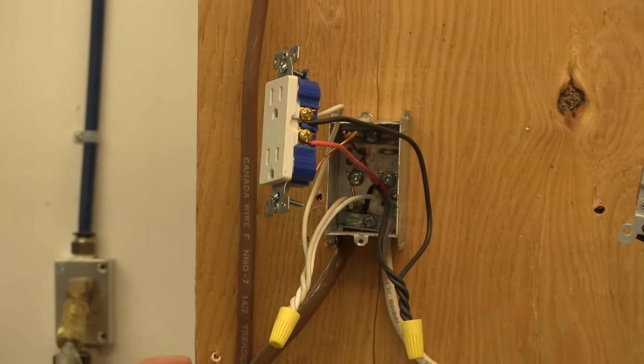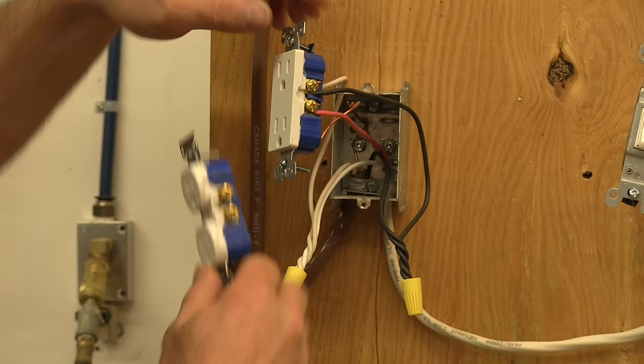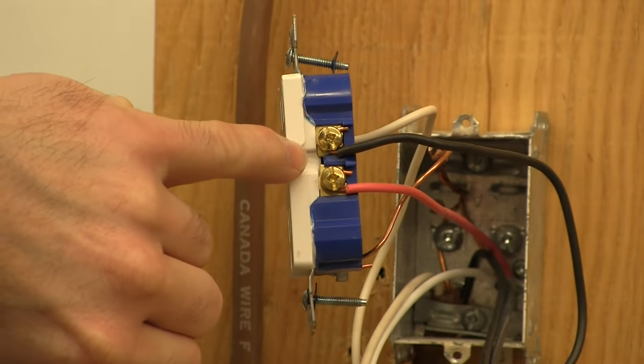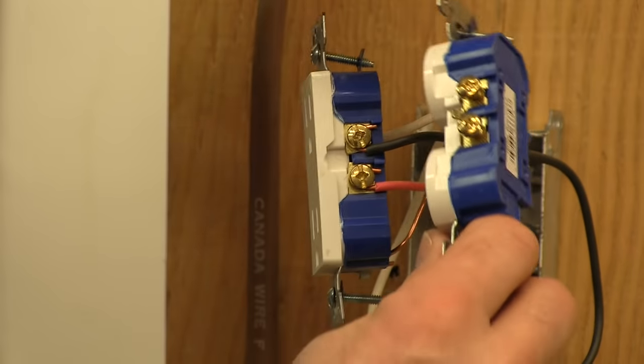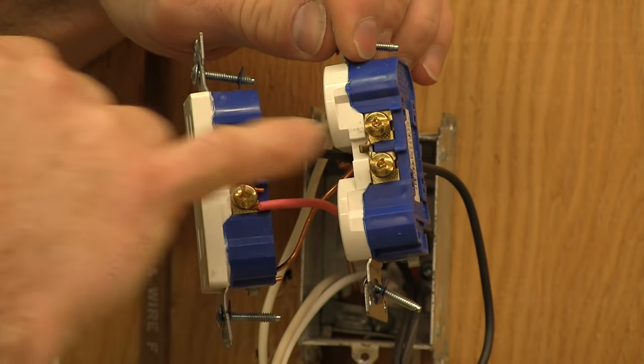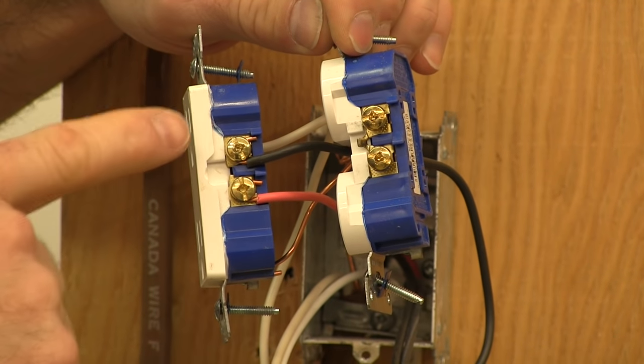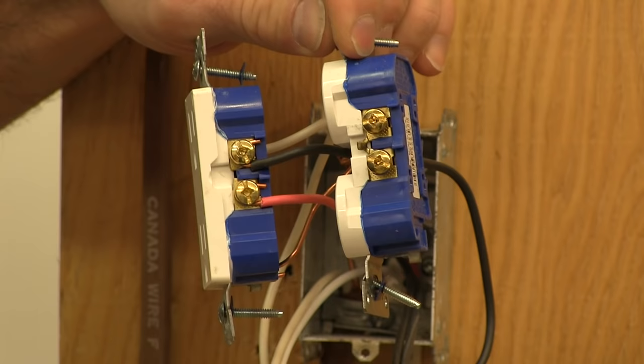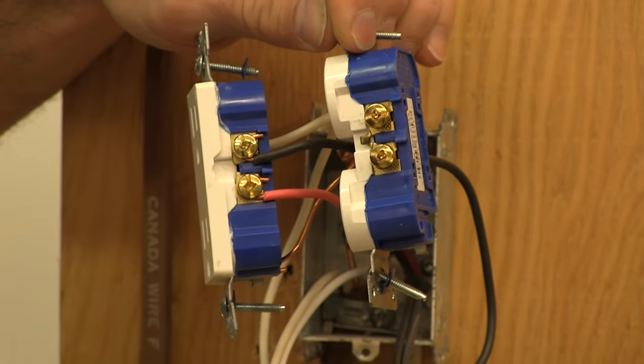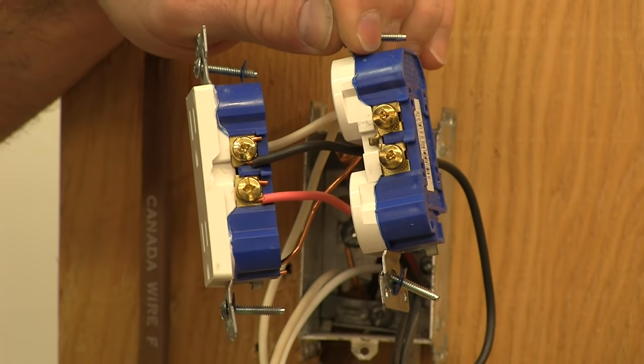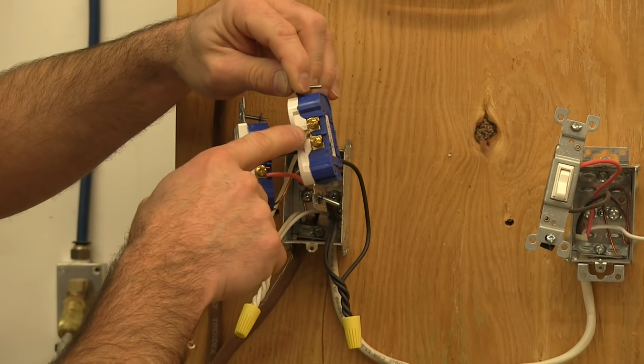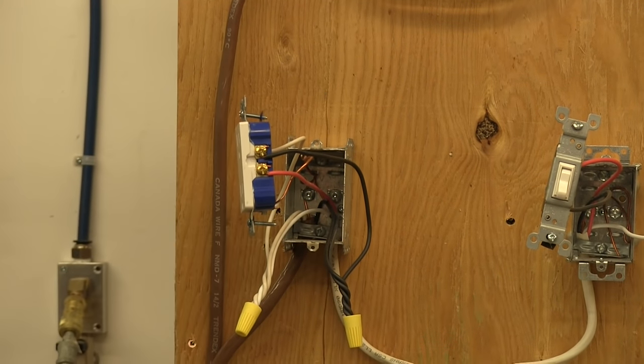Now the other thing you have to do if you're going to split a receptacle like this is, if you look right in here, there'll be a flat piece of metal in this space between these two screws. You can see it on this new one—you can see the tab right here. You need to break that tab out if you're going to have two different power sources operating two different receptacles. So that's very important. Otherwise you're going to have a big spark and boom and probably blow the breaker when you hit that switch. So make sure you take that tab out any time you're splitting the sources there.